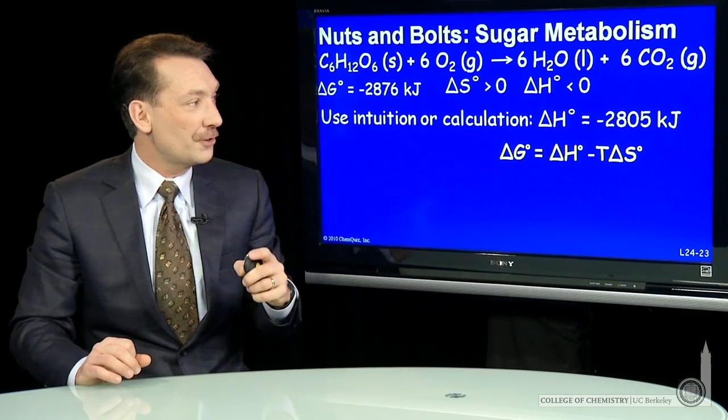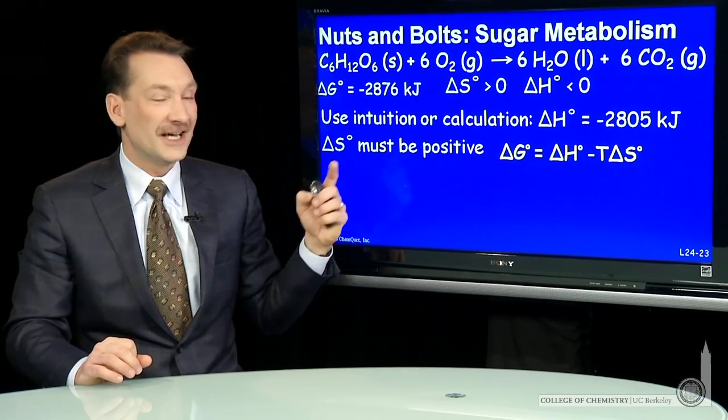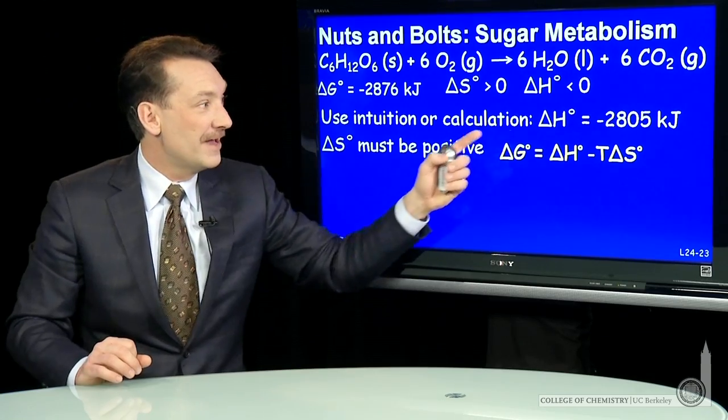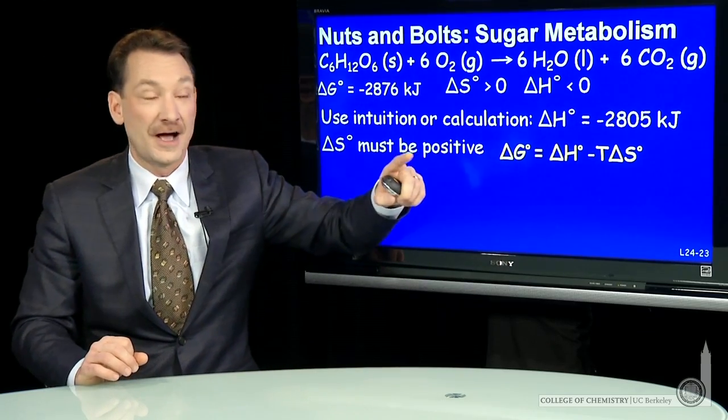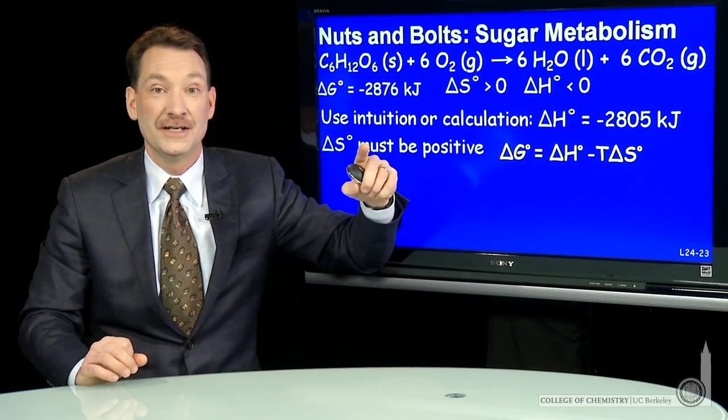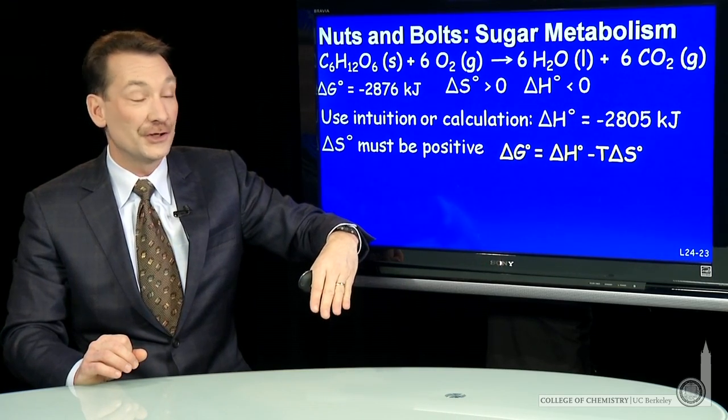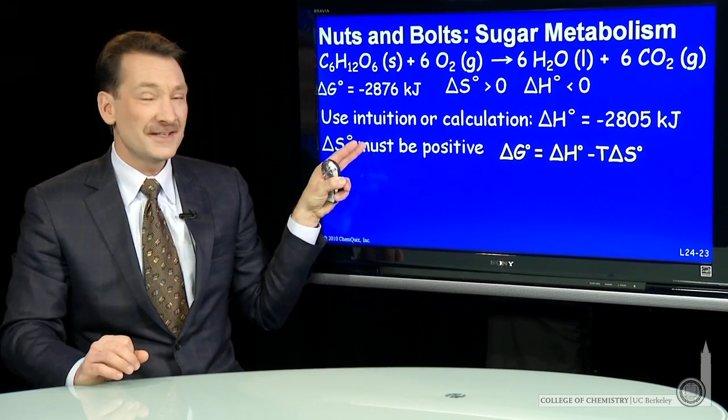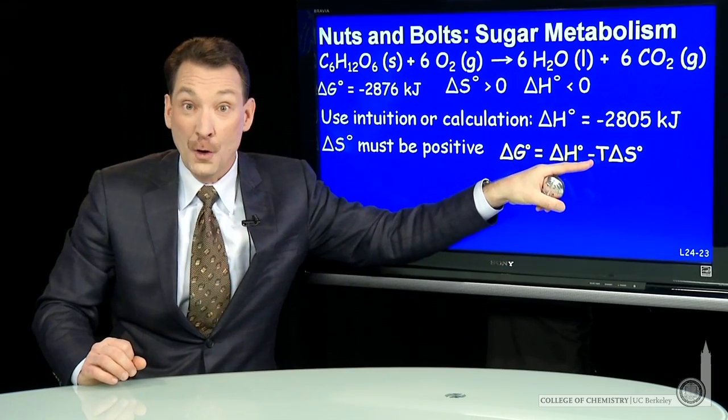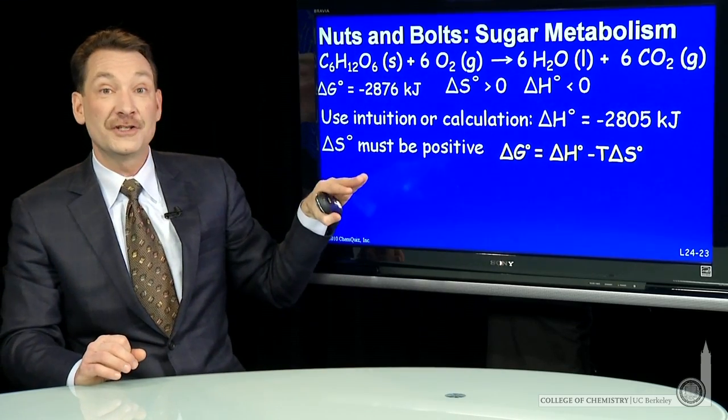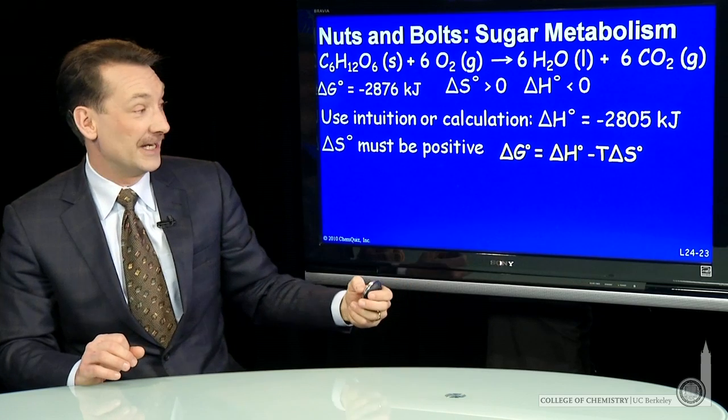So with an exothermic chemical reaction and delta S, I have an intercept on the y-axis that's negative for delta G. So it starts out at negative. As temperature increases, delta S is positive. That means the slope is negative. So delta G will start negative and stay negative.